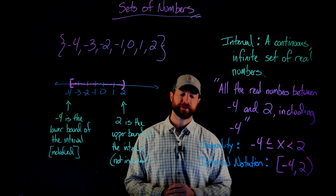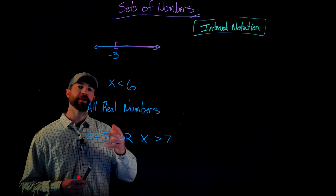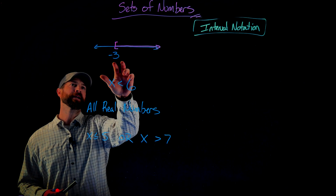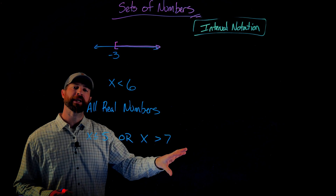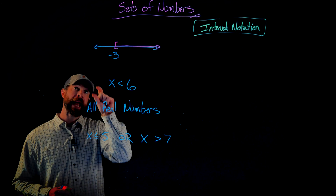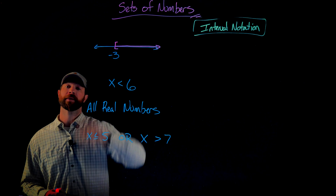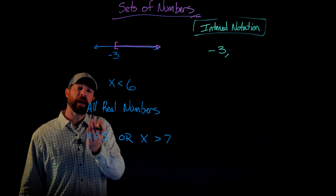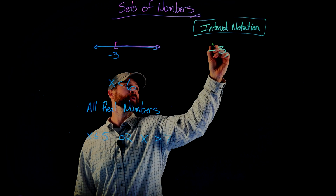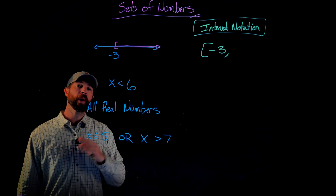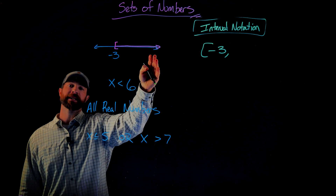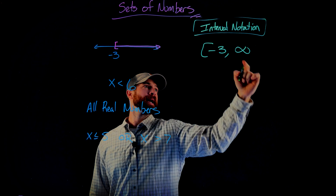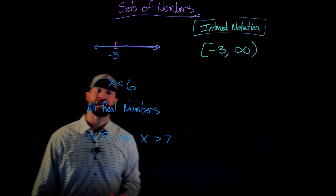Let's look at a few more examples of intervals. Here I have four different intervals and I'll write each in interval notation. In the first case, I have a number line representing all numbers greater than or equal to negative 3, with a bracket at negative 3. So negative 3 is the lower bound and it is included. There is no upper bound — it's an open interval up to infinity. When we don't have an upper bound, we use the infinity symbol to represent that.